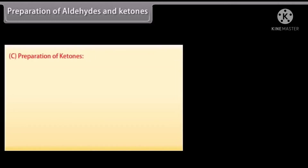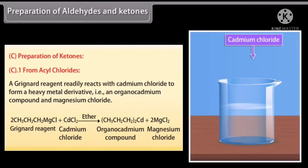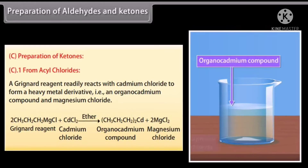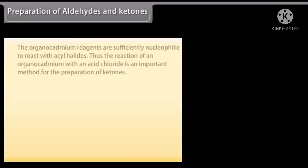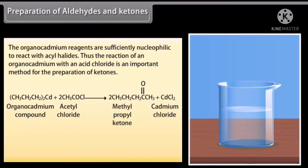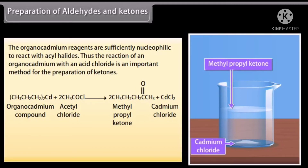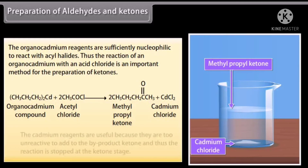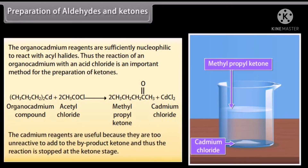Preparation of ketones from acyl chlorides: a Grignard reagent readily reacts with cadmium chloride to form an organocadmium compound and magnesium chloride. The organocadmium reagents are sufficiently nucleophilic to react with acyl halides. Thus, the reaction of an organocadmium reagent with an acid chloride is an important method for the preparation of ketones. The cadmium reagents are useful because they are too unreactive to add to the ketone product, so the reaction stops at the ketone stage.